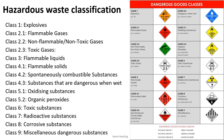Class two is gases: 2.1 is flammable gas, 2.2 is non-flammable non-toxic gas, and 2.3 is toxic gas. Class three is flammable liquid. Class four covers solids: flammable solids, spontaneously combustible solids, and solids dangerous when wet. Class five is oxidizing substances or organic peroxides. Class six is toxins. Class seven is radioactive. Class eight is corrosive. Class nine is miscellaneous — anything that doesn't fit above, such as asbestos.